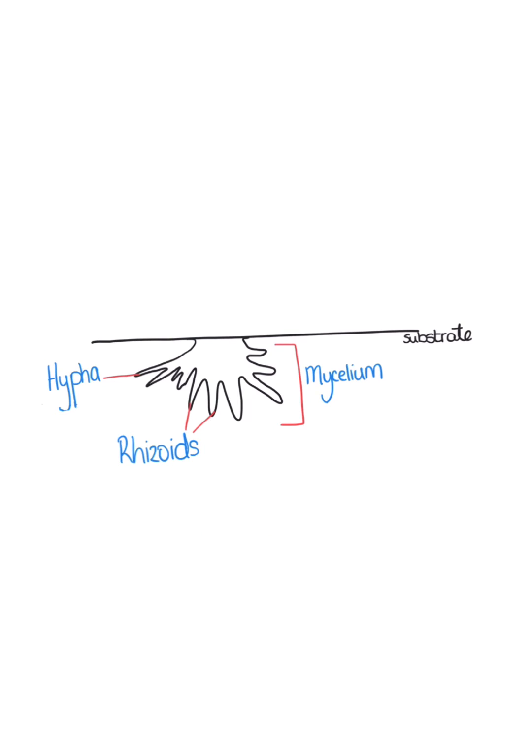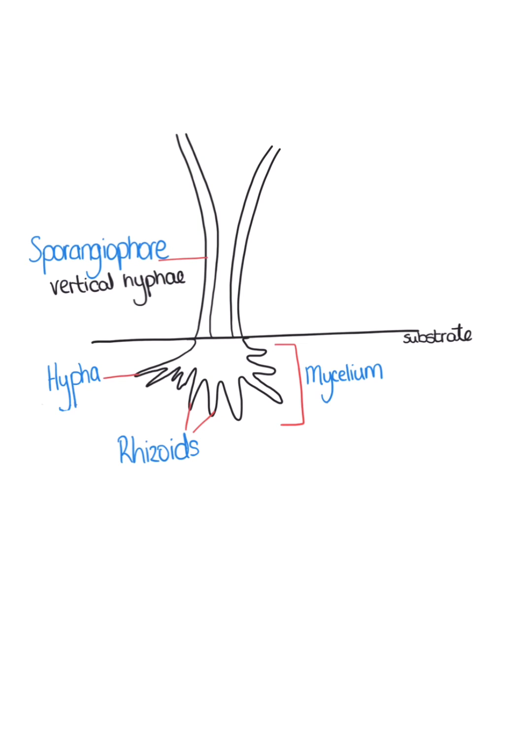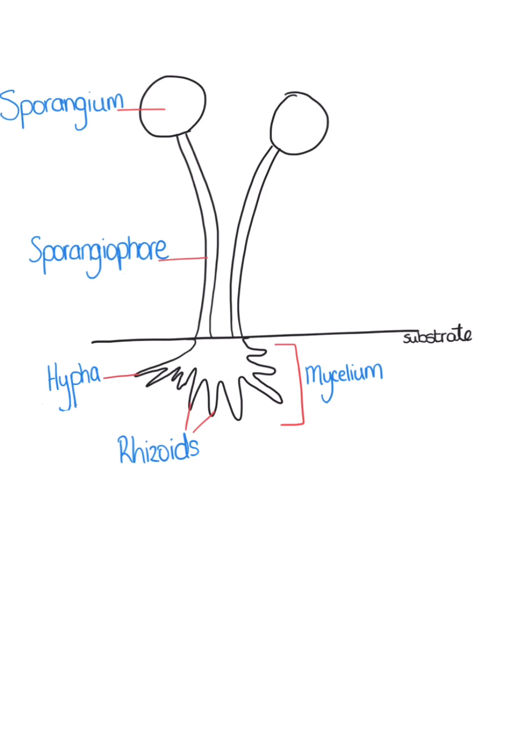The sporangiophore is a vertical hyphae which grows up from the substrate. The sporangium is a swelling on top of the sporangiophore, and it contains many haploid spores.